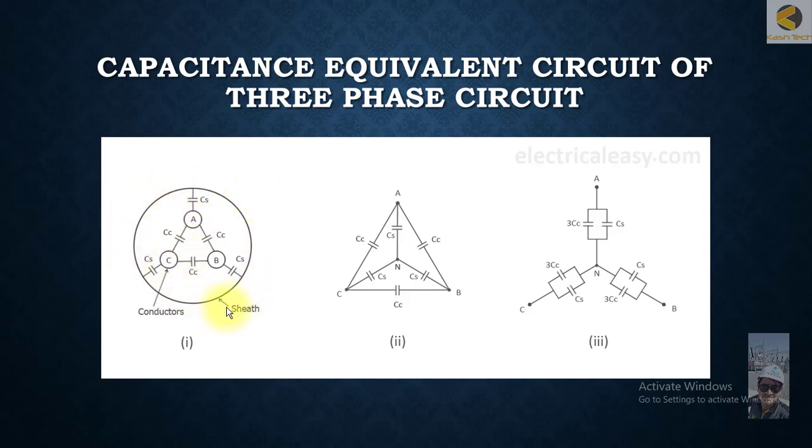So there will also be capacitance between phase A to sheath, phase B to sheath, and phase C to sheath. This is effectively the equivalent circuit for the capacitance of the cable with metallic sheath.